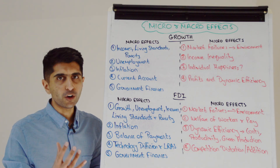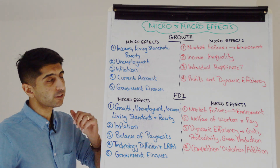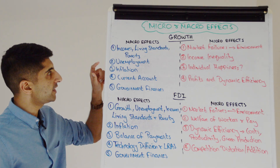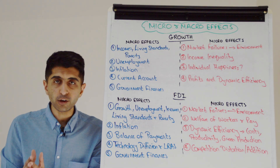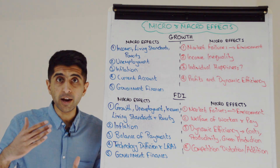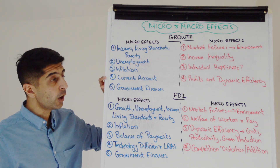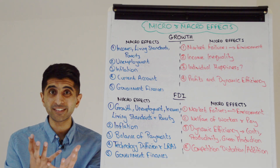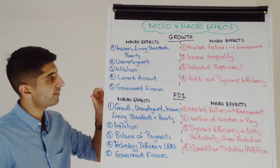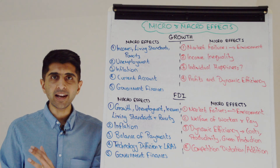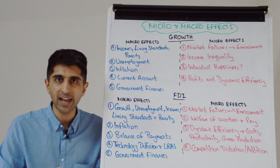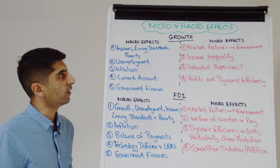Now the micro and macro effects of economic growth. Let's go to macro effects first. With economic growth, we get higher incomes, therefore improvements in living standards and alleviation of poverty. With higher economic growth, more jobs are created — labor is a derived demand, thus pushing down unemployment. If economic growth is coming from higher AD, we might get demand-pull inflation. We might get worsening of the current account position — because of the sucking in of imports as people are richer, but also with higher inflation exports being less competitive. We might get improvement in government finances because with higher economic growth: higher income tax revenues, corporation tax revenues, VAT revenues, tariff revenues. All macro effects.